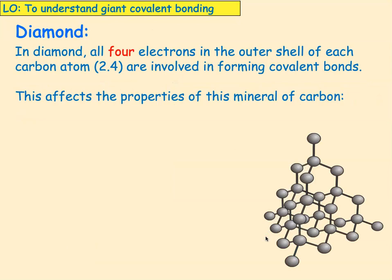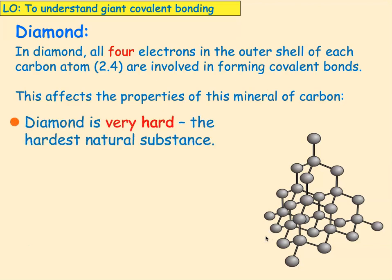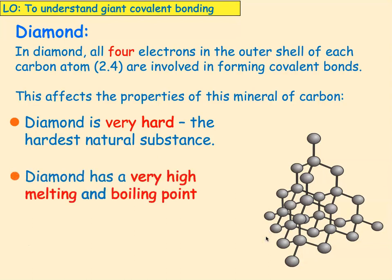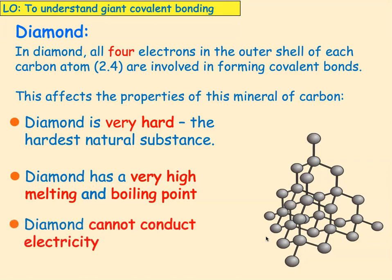Diamond has all four electrons in the outer shell of carbon involved in making another bond with another carbon atom. Every single electron makes a covalent bond with another carbon atom. Because all the bonds are made, diamond is extremely hard — in fact it's the hardest natural substance we know. It has a very high melting and boiling point. And diamond, because there are no charged particles present, no ions, no electrons free to move, cannot conduct electricity.